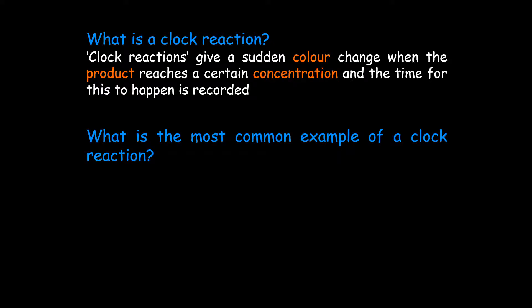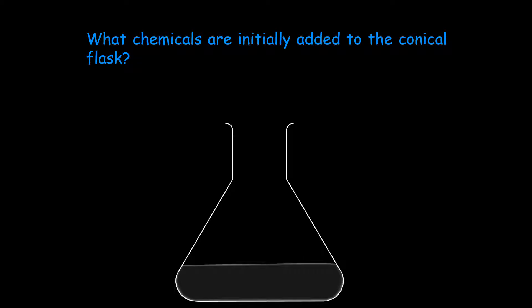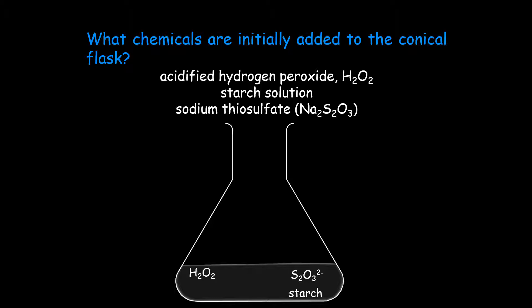Clock reactions give a sudden color change when the product reaches a certain concentration and the time for this to happen is recorded. The most common example is the iodine clock reaction where iodide reacts with hydrogen peroxide in acidic solution forming iodine and water. Into our conical flask we add acidified hydrogen peroxide, starch solution, and sodium thiosulfate solution.